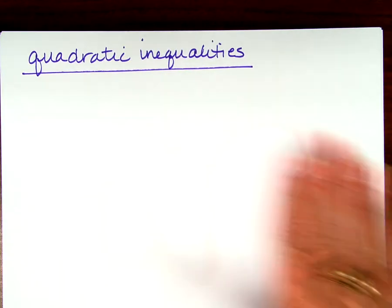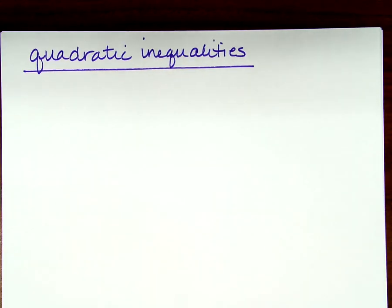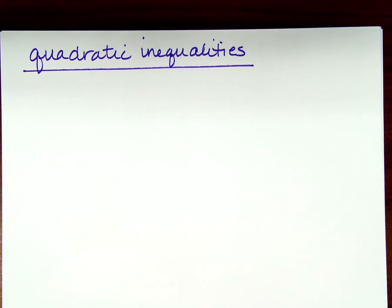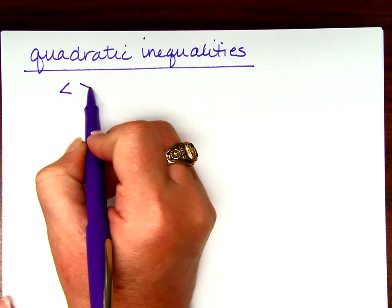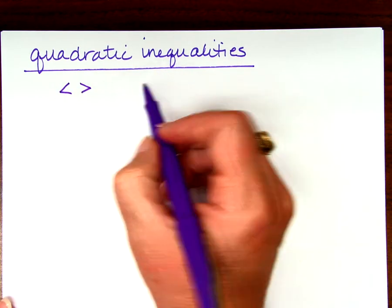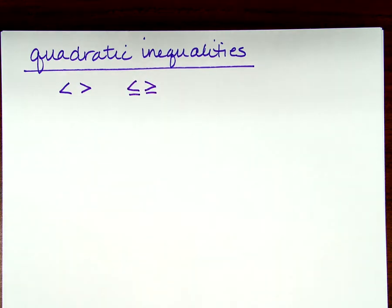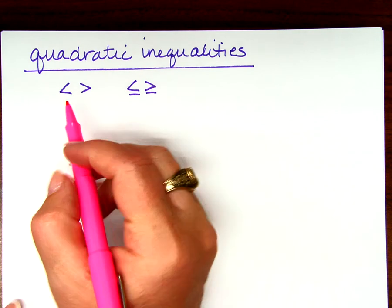What does it mean when we do something called quadratic inequalities? What does it mean when we do anything with inequalities? What's different that we have to do as opposed to quadratic equations? The signs are different, right? Either less than, greater than, less than or equal, or greater than or equal. And if we graph them, what do we have to do?